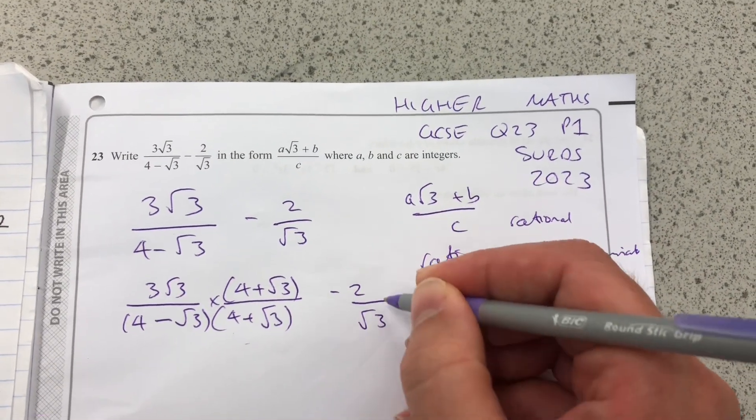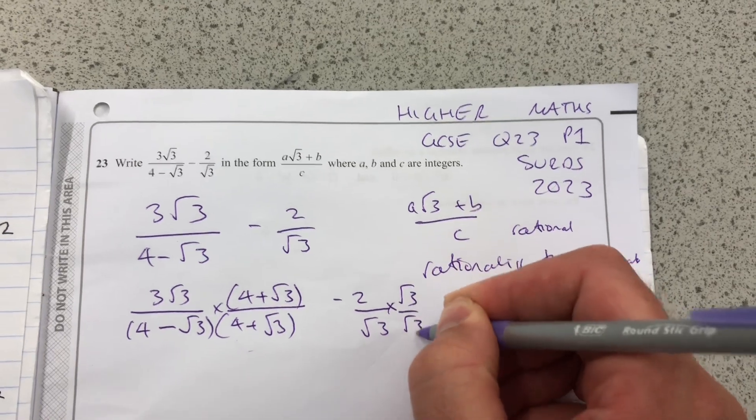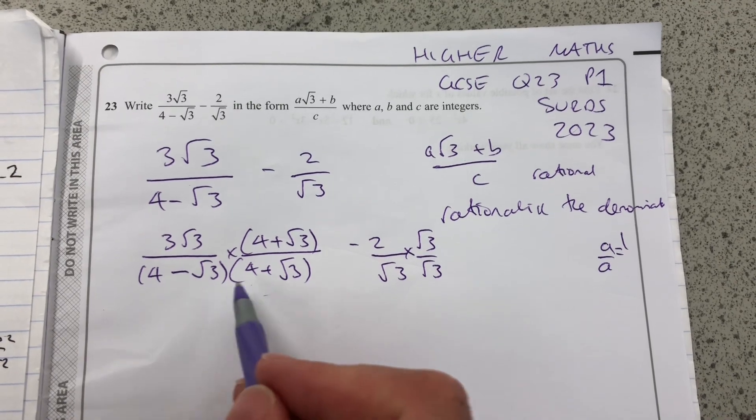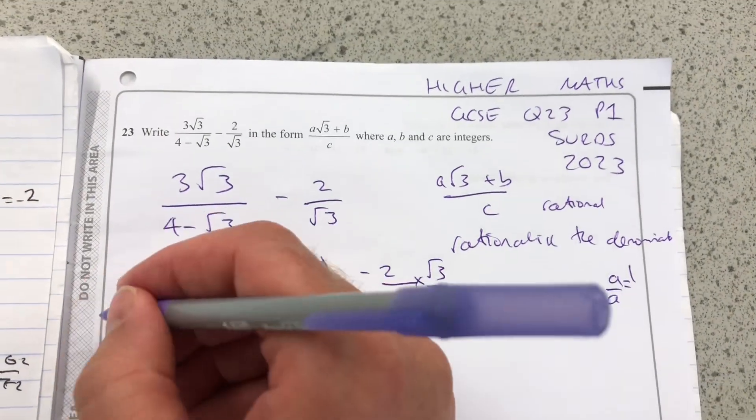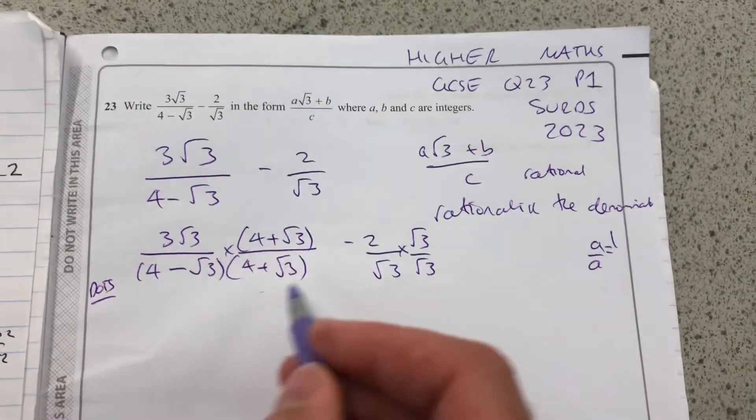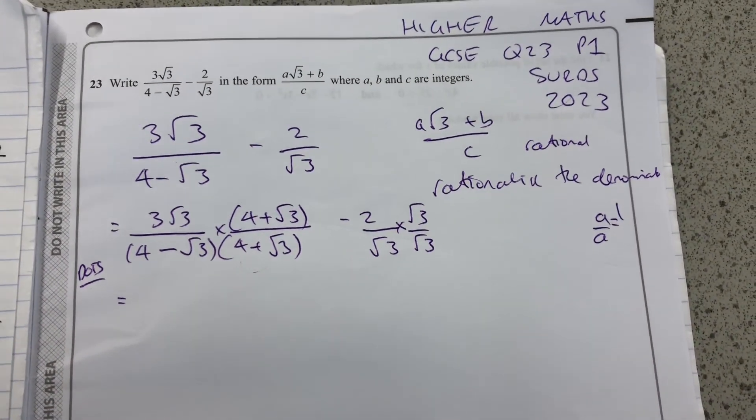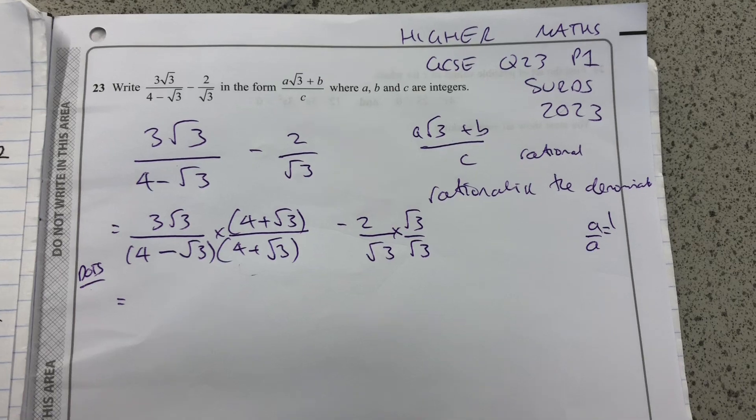I'm going to multiply that by root 3 over root 3. I want to change the sign here so that the middle terms are going to cancel. If you know about difference of two squares, it's a very similar thing here. And those who are going to take further maths will see a thing called a complex conjugate.